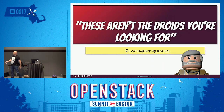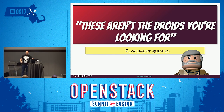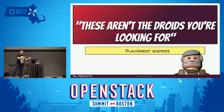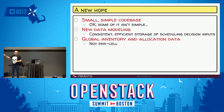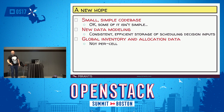Now we get into the good stuff — the SQL stuff. This is all about the placement queries. I'm going to lead you through building up the SQL expressions that return the resource providers the scheduler is looking for. You may remember from this morning's talk that the scheduler in Nova now makes a call to the placement service to get a list of resource providers that have capacity for a set of requested resource amounts and traits.